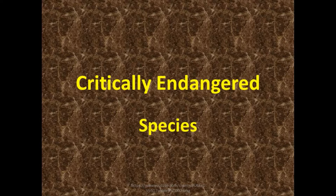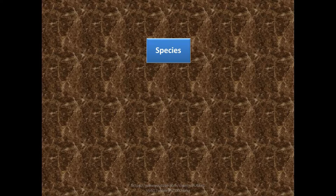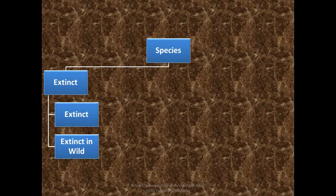In this video we are going to discuss critically endangered species. First, species are classified into the following types: extinct, extant in wild, and others. Extinct means they are no more on this planet. Extant in wild means they are no more in their natural habitat but are present on Earth in zoos and protection centers. Completely extinct means they are entirely gone, like dinosaurs.